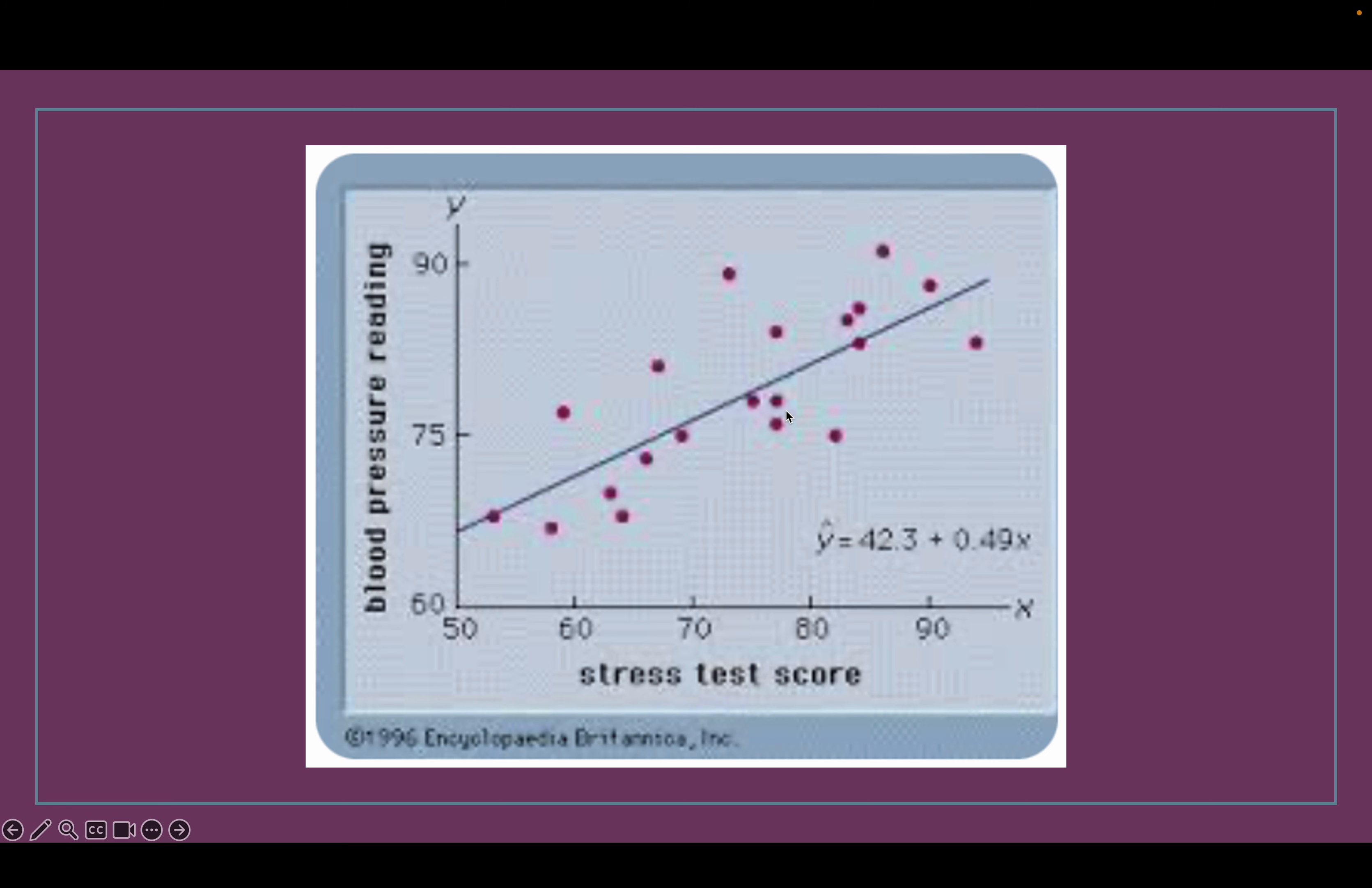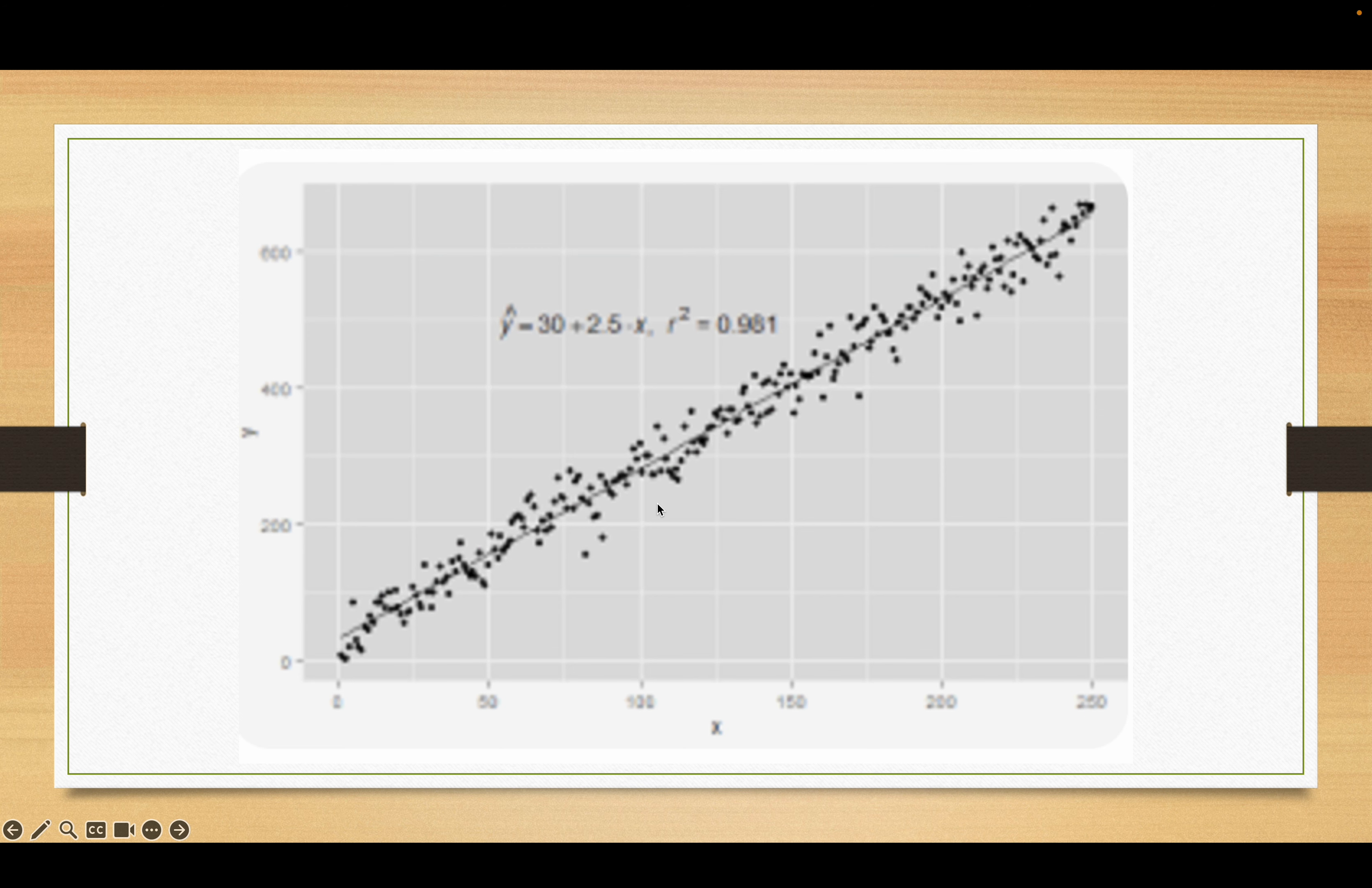Here's an example that the calculator did. Whoever was doing this problem put in all the x and y values for the purpley pink scatter plots, then they told the calculator how to do the linear regression and it came up with y equals 42.3 plus 0.49x, which is better written y equals 0.49x plus 42.3, mx plus b. We usually put the x part first.